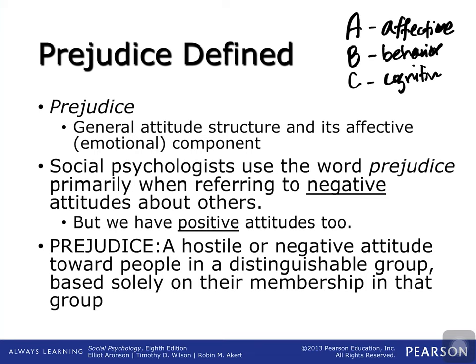If we look at attitudes towards other people, prejudice actually falls into the affective or emotional component of attitudes toward other people. Typically when you hear the word prejudice, we think of a negative attitude toward others, but we can actually be prejudiced towards or against people. For this chapter, we're going to use it to look at only the negative attitude, because it's easier to talk about if we define it as one thing.